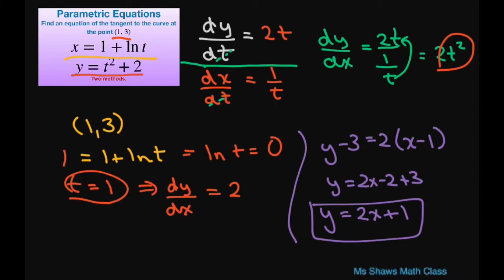Now the other method is writing your rectangular equations. And so what we do is let x equals 1 plus ln of t. Therefore, if you solve for ln of t, that's going to give you x minus 1. We can write this solve for t and that would be t equals e to the power of x minus 1.